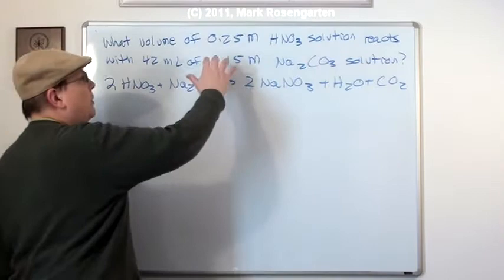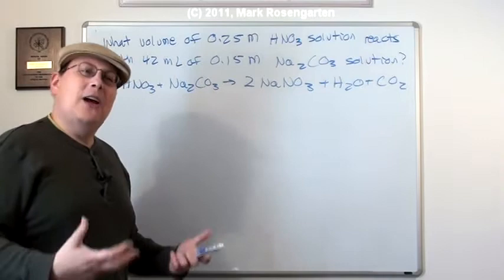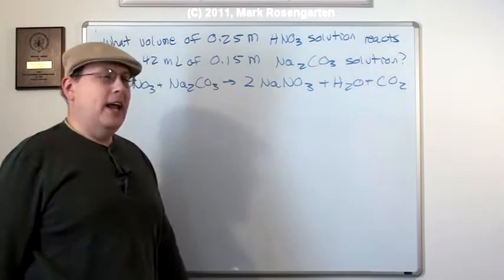But, we know the molarity of the solutions, not the number of moles of solution. So our first step is to find out how many moles of solution this 42 milliliters of 0.15 molar Na2CO3 is.